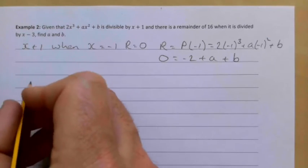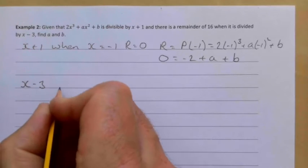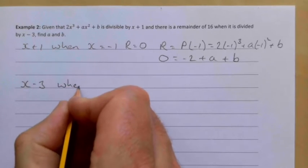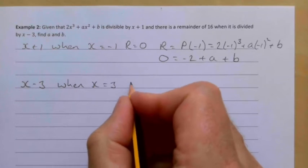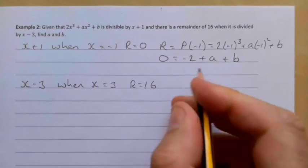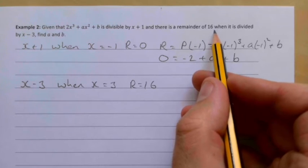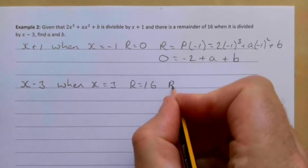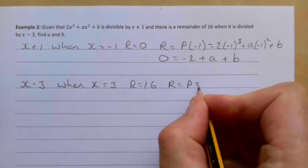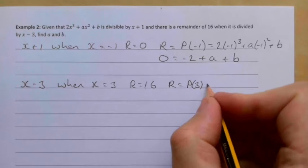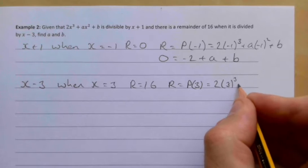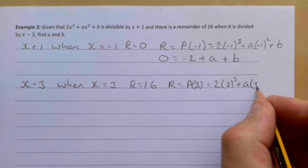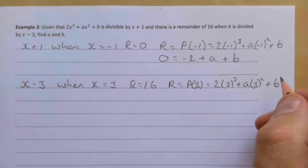Now for x - 3. When x = 3, r = 16, meaning there's a remainder of 16. So r = P(3). We're substituting 3 into the polynomial: 2(3)³ + a(3)² + b.